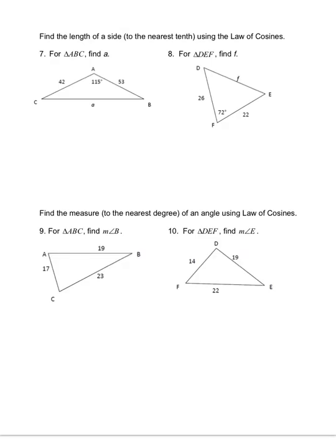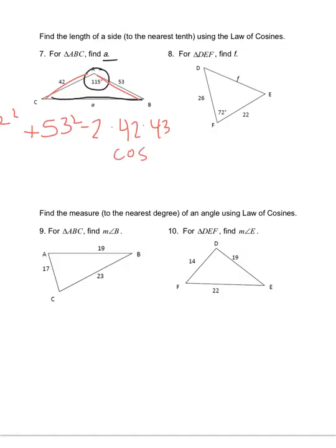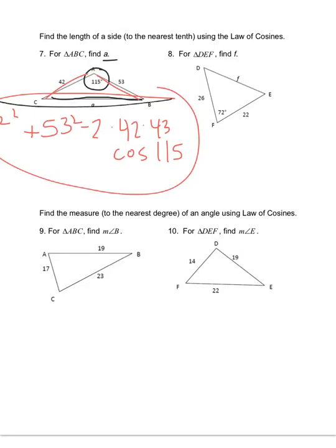This time use law of cosines. You're trying to find a side length — you know the angle but not the side opposite it, so that side will be A squared. It's A squared equals 42 squared plus 53 squared minus 2 times 42 times 43 cosine of 115. Then take the square root of all of that. Put it carefully in your calculator and round to the nearest tenth — A is approximately equal to 80.3.